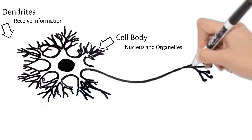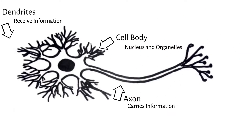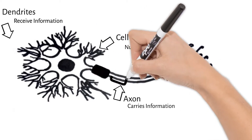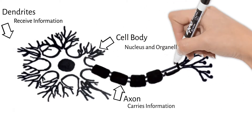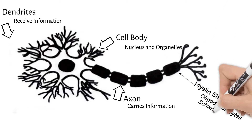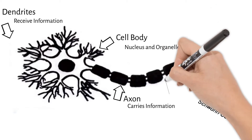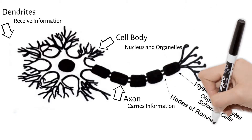The axon is this long section that carries the message to other neurons or effector cells. Many neurons have axons covered with myelin sheath. Myelin is a fatty protein formed by glial cells. In the central nervous system, oligodendrocytes myelinate the axon, but Schwann cells myelinate axons in the peripheral nervous system. The gaps between each myelin are called nodes of Ranvier.